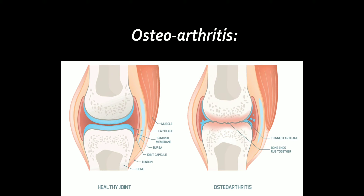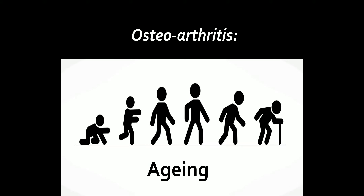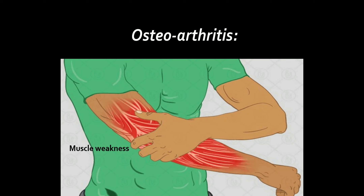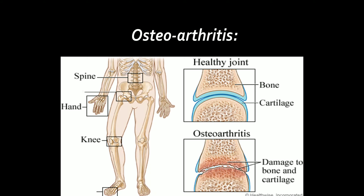Osteoarthritis: In this condition, joint cartilage is degenerated. It is caused by various factors like aging, obesity, muscle weakness, etc. This is the most common type of arthritis and normally affects the hands, knees, and spine.